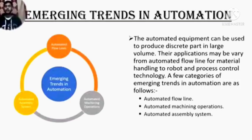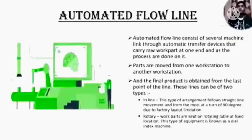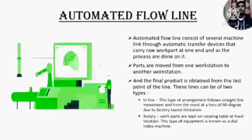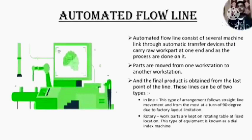A few categories of emerging trends in automation are: automated flowlines, automated machining processes, and automated assembly systems. First of all, automated flowlines. Automated flowlines consist of several machine links through automated transfer devices that carry raw work parts at one end, and as the processes are done on them, parts are moved from one workstation to another and the final product is obtained from the last point of the line. These lines can be of two types: inline or rotary.